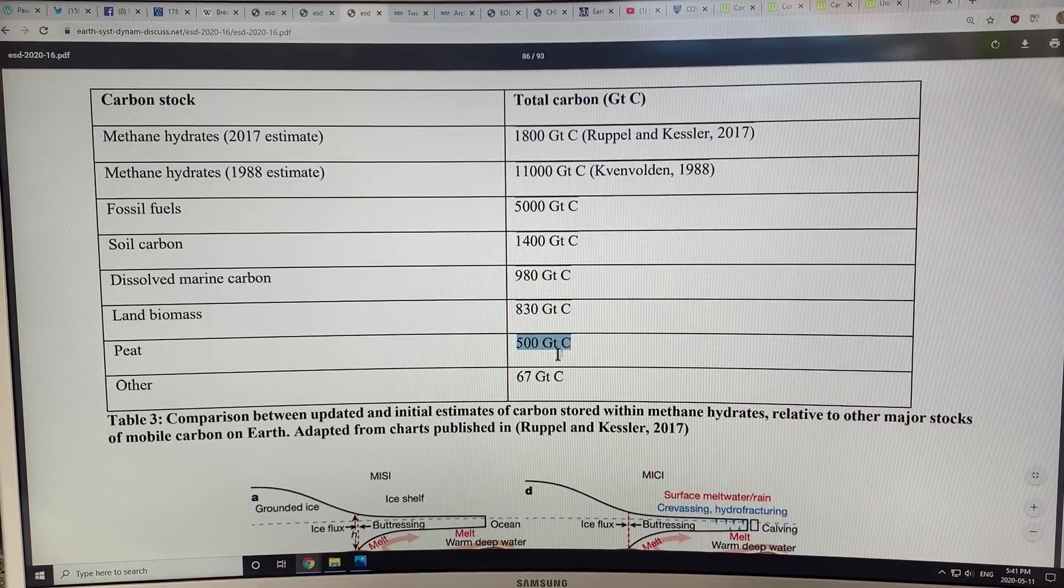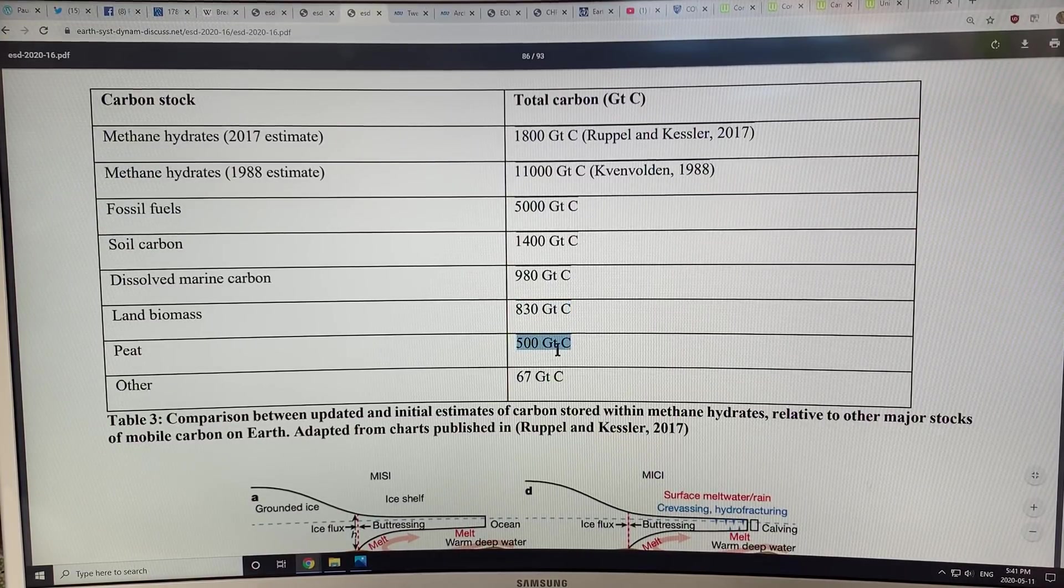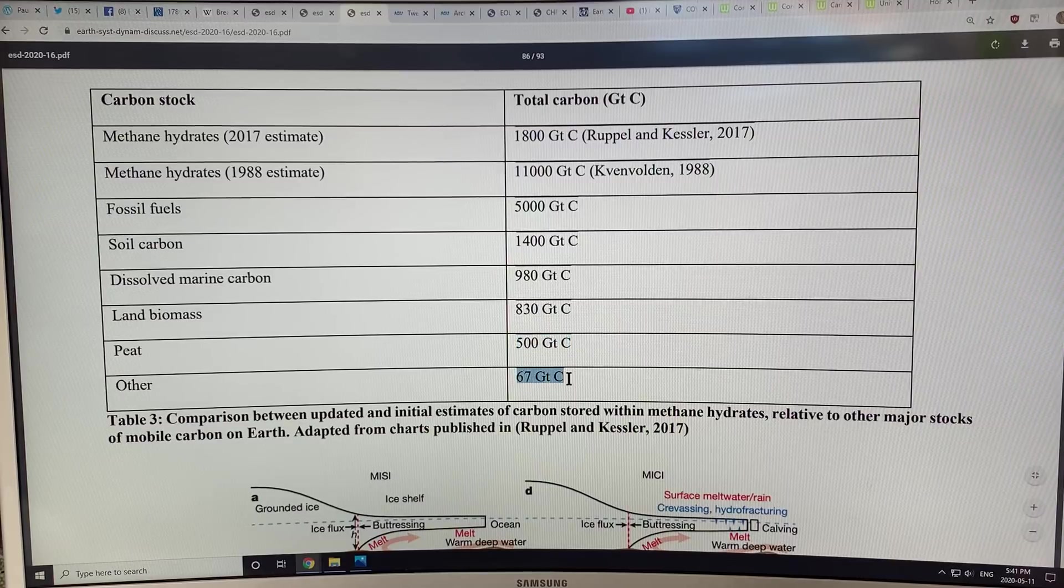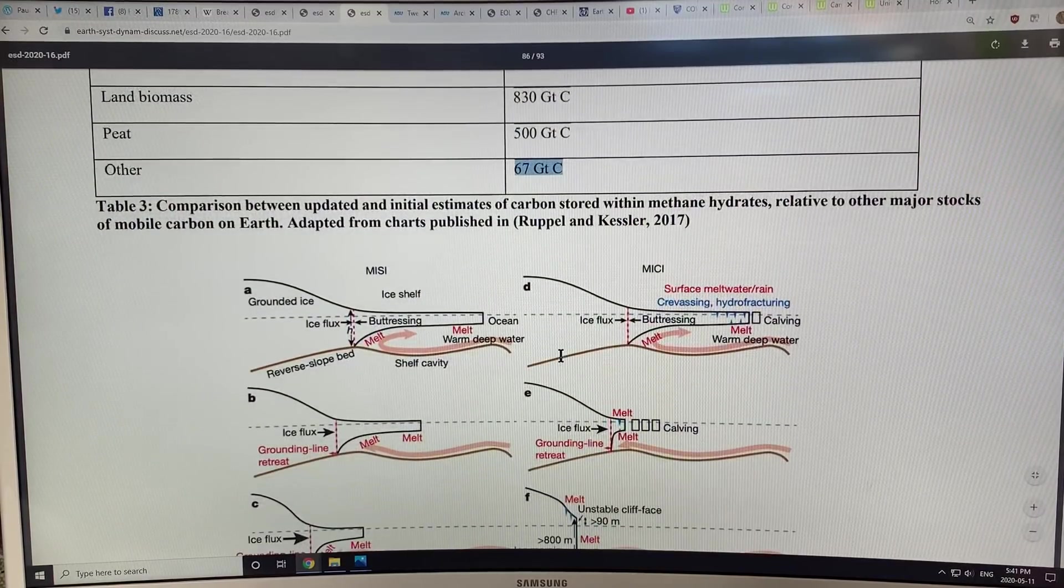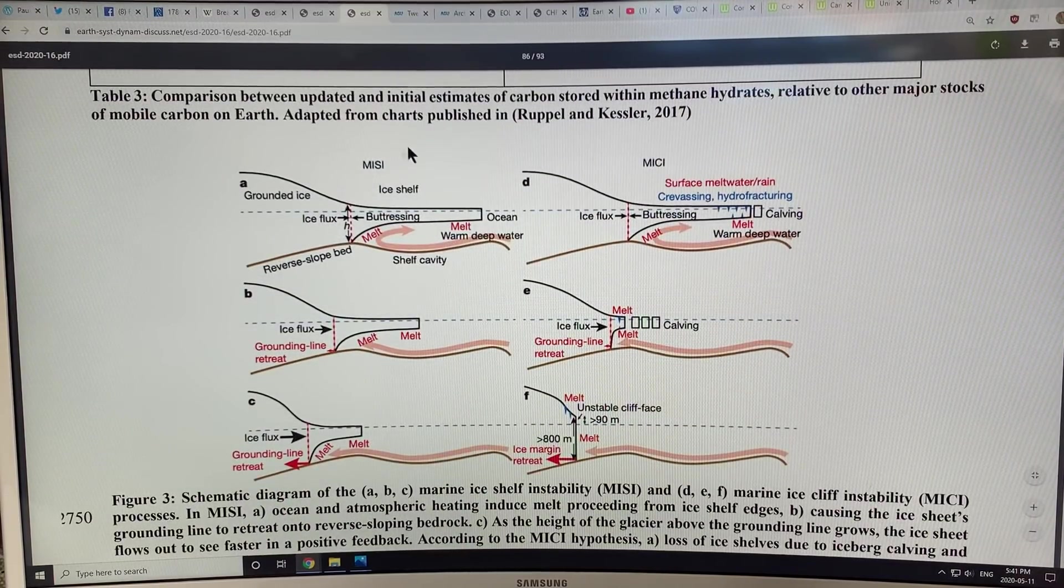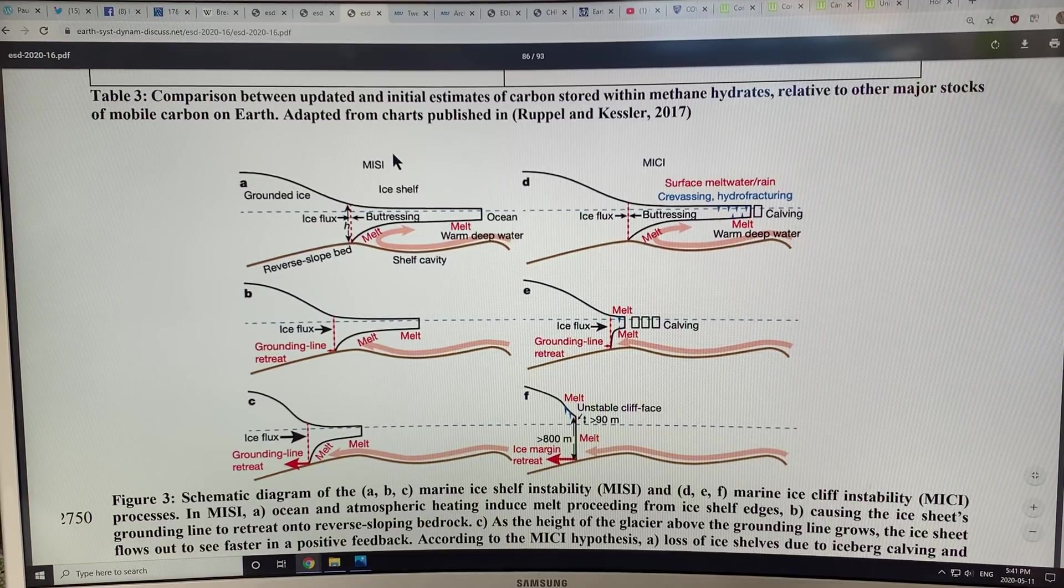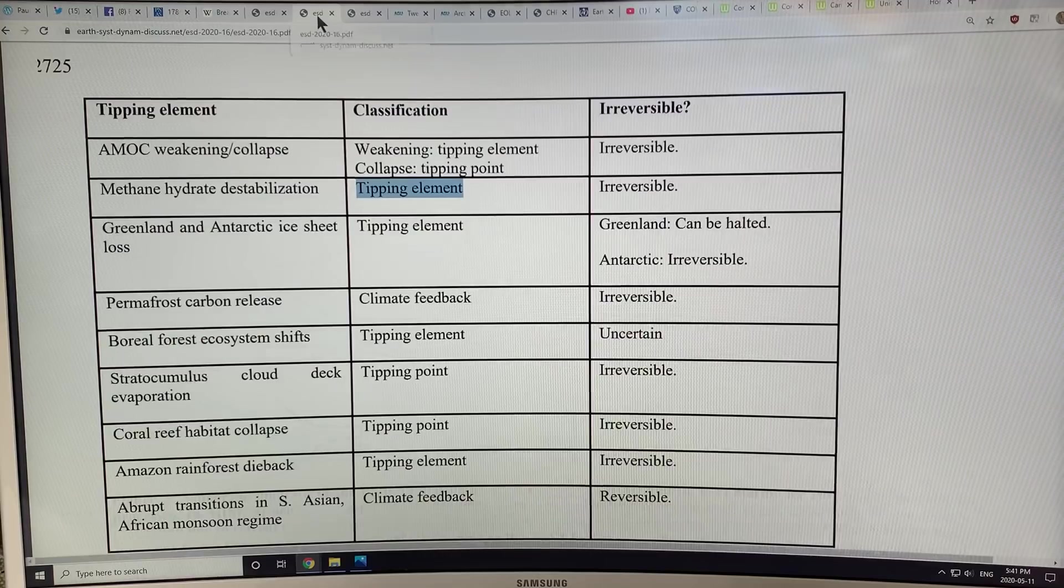Peat, peat bogs, 500—so very significant—and other 67. So there's lots of carbon. It's just how quickly will it be released is the big question.